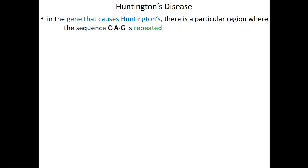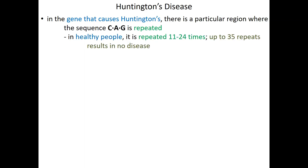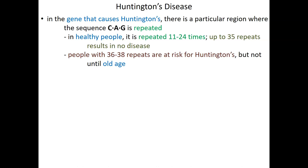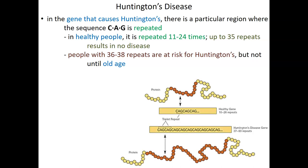Huntington's is a fairly unique disease due to what's called expanding nucleotide repeats. The gene is called Huntingtin, and there's a particular part of that gene with a trinucleotide repeat — CAG, cytosine-adenine-guanine — repeated many times in a row. In healthy people, the number of repeats is somewhere between 11 and 24, and up to 35 repeats results in no Huntington's disease. But once you hit 36 repeats, you're at risk. These islands of repetitive sequences are quite common in our genome, though not very common in protein-coding genes.